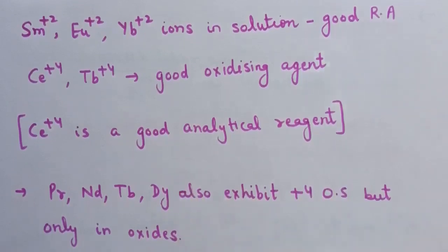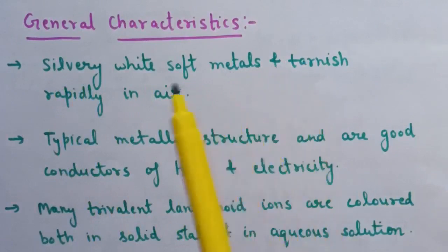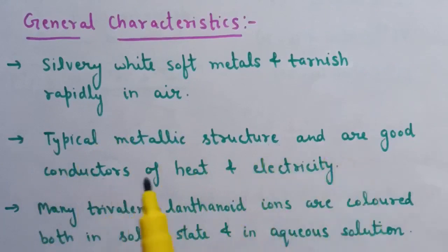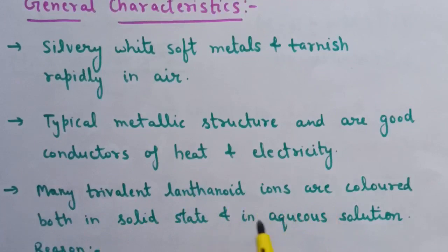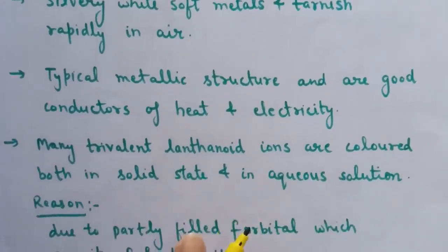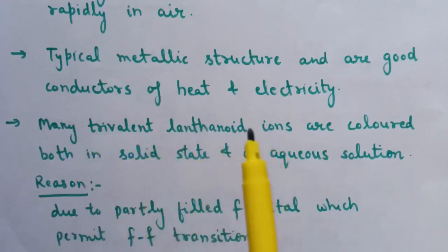General characteristics of lanthanoids: first, all lanthanoids are silvery white soft metals and they tarnish rapidly in air. Second, lanthanoids have typical metallic structure and are good conductors of heat and electricity. Third, many trivalent lanthanoid ions are colored both in solid state and in aqueous solution, due to partially filled f orbital which permits f-f transitions.